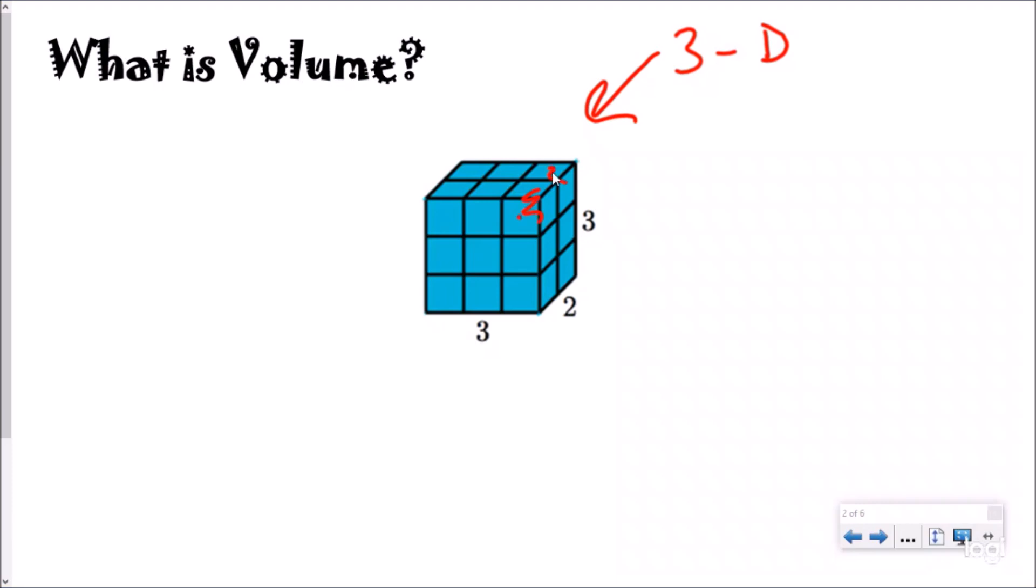So we'd have 1, 2, 3, 4, 5, 6, 7, 8, 9, 10, 11, 12 on the back, 13, 14, 15, 16, 17, 18. And we could say our volume would be 18 units cubed.